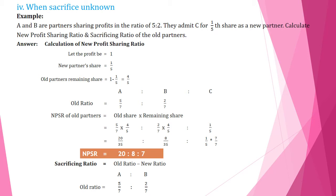Old ratio for A and B is 5/7 and 2/7. We multiply each partner's old share by the remaining share (4/5) to get their new share. For A: 5/7 × 4/5 = 20/35. For B: 2/7 × 4/5 = 8/35. For C: 1/5 — multiply by 7/7 to get an equivalent denominator of 35, giving 7/35. So the new profit sharing ratio is 20:8:7.